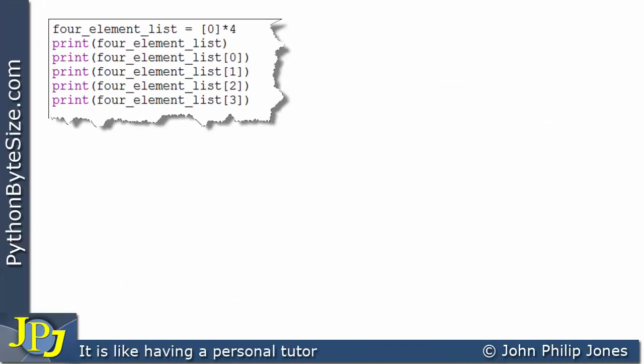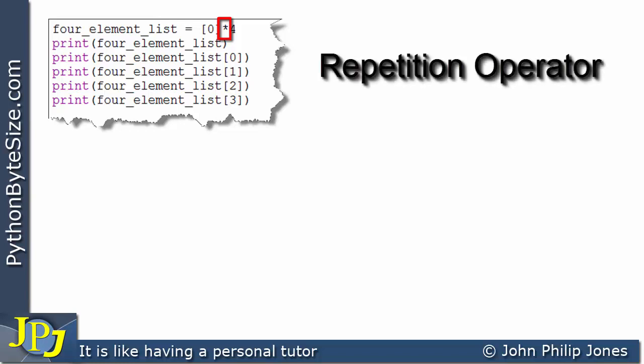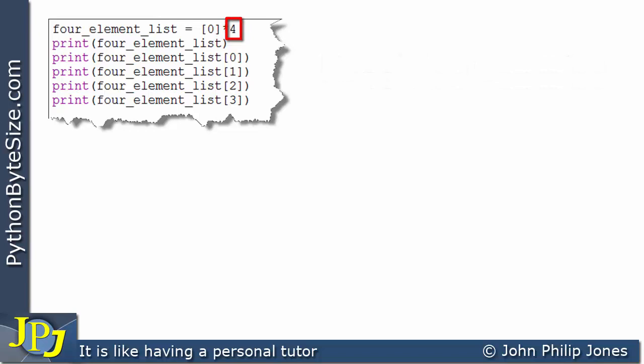Let's consider this computer program and look to the first line. Here you can see I've chosen the name four_element_list, and that has been assigned this. You can see in square brackets I have zero, and this, which looks like a multiplication operator but is indeed something in this context referred to as a repetition operator, is followed by four. That means the list is going to contain four of these, four zeros.